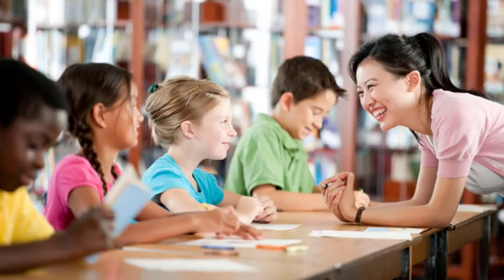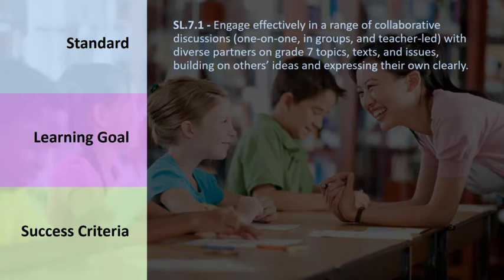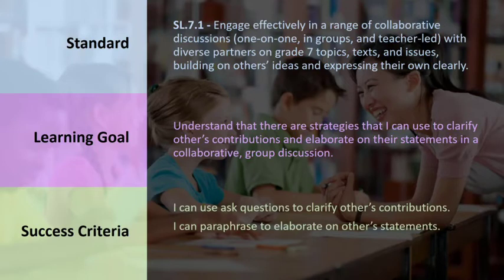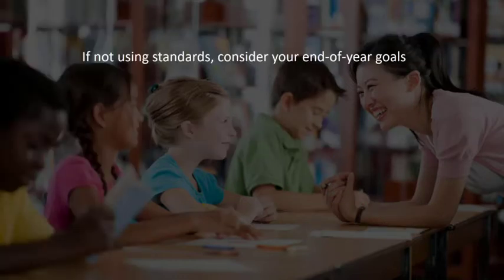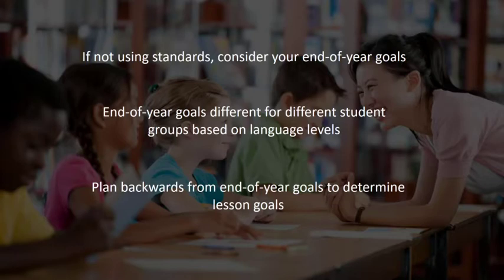Let's look at an example of a standard, learning goal, and success criteria. We start with the standard, which is about engaging in collaborative discussions in a range of different configurations, building on one another's ideas, and expressing one's own. The learning goal does not encompass the full scope of the standard, but only addresses one element — to build on others' ideas in collaborative group discussions. The success criteria are then created based on the learning goal and relate to the lesson activity, providing more specific detail to the strategies referred to in the learning goal. If you are not using standards in your native language instruction, consider your end-of-year goals for your students, which will probably differ based on students' language levels. Taking one goal at a time, you can plan backwards to determine lesson goals that build towards end-of-year expectations.